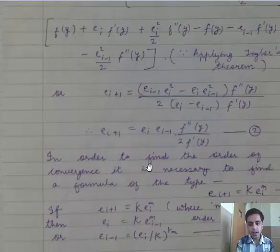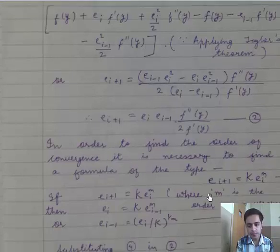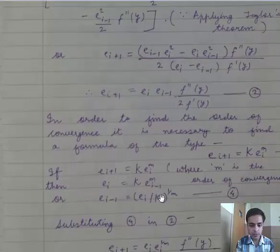In order to find the order of convergence, it is necessary to find a formula of the type ei+1 equals k times ei to the power m. This is our third equation. Here m is the order of convergence which we will find.